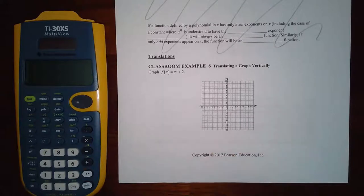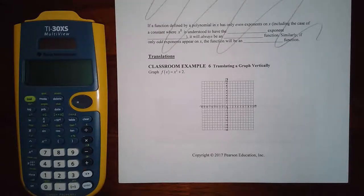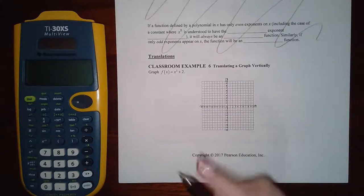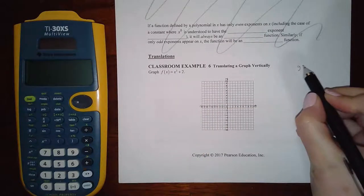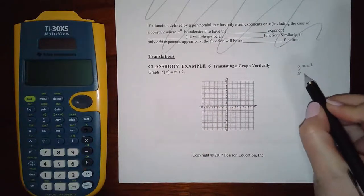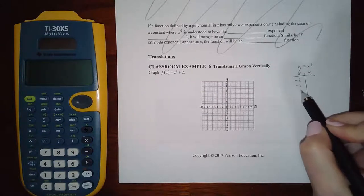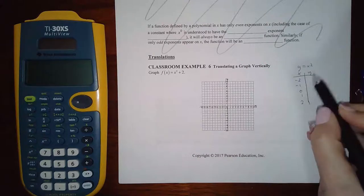Now for translations. Translations happen when we add or subtract numbers. We get stretching and shrinking when we multiply by numbers, and reflections when we multiply by negatives. But now what happens if we add or subtract? The basic graph here is y = x squared, and I want to draw it as a reference so we can see what translating does to it.